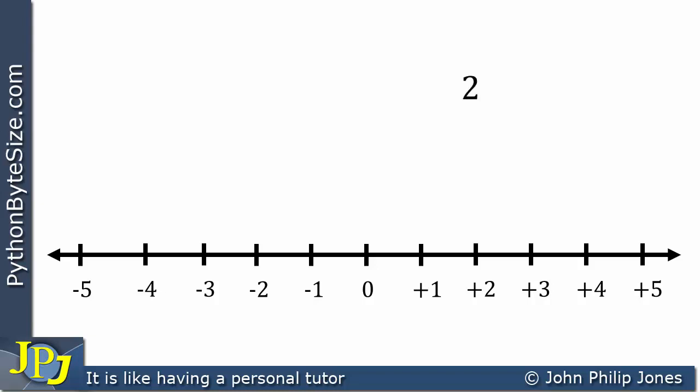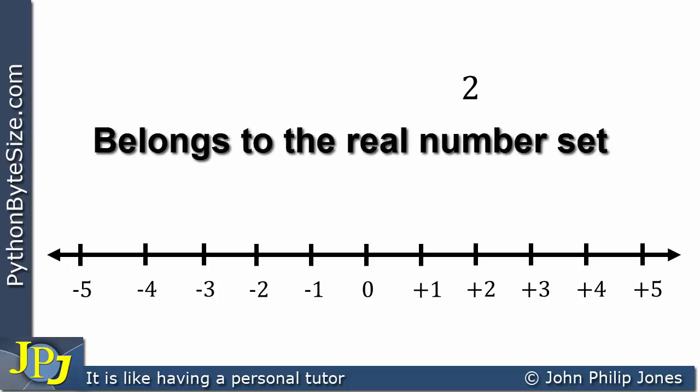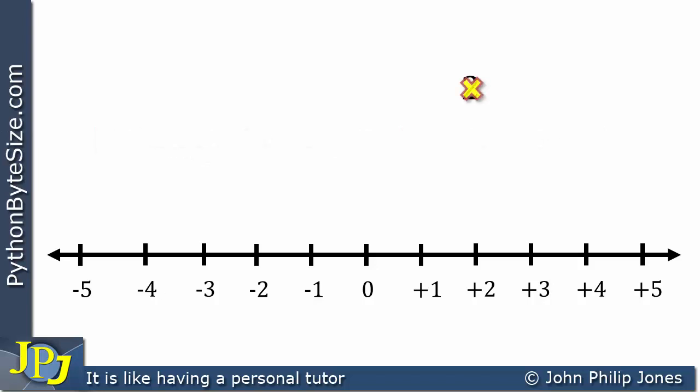Let's consider some examples of real numbers. Here you can see I've got 2, which is an example of a real number — it belongs to the real number set. It will have a position on the real number line, and I'm going to show that with this x here, marking the spot on the real number line for the real number 2. Here you can see I've got 4.5, and its position on the number line will be represented by that x marking the spot.